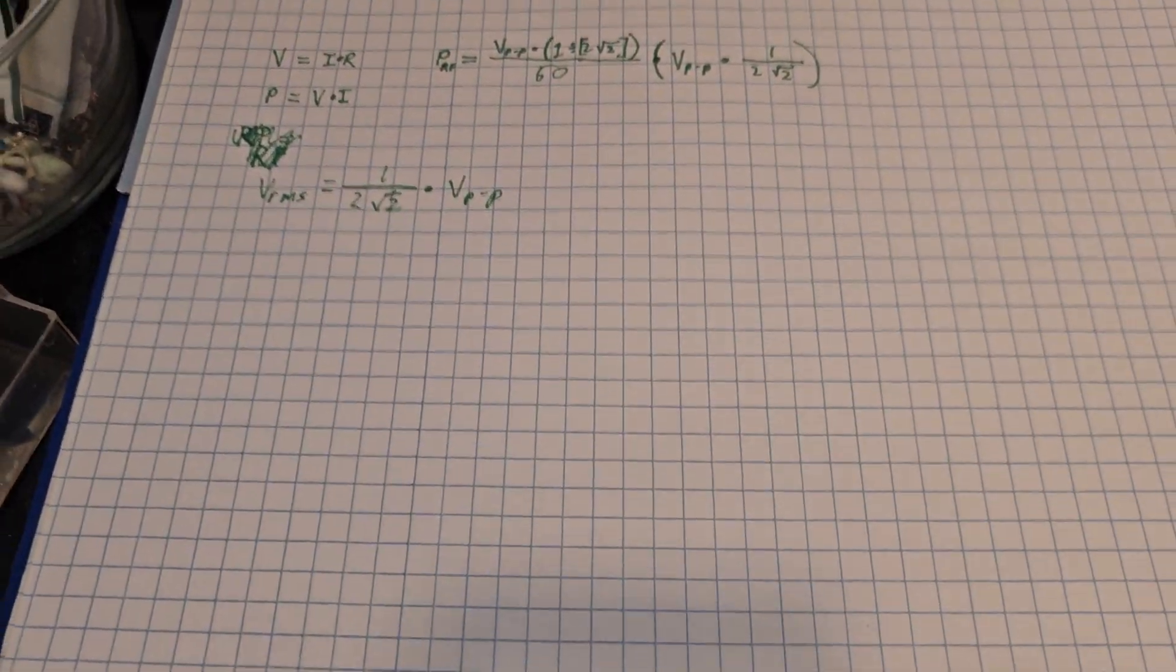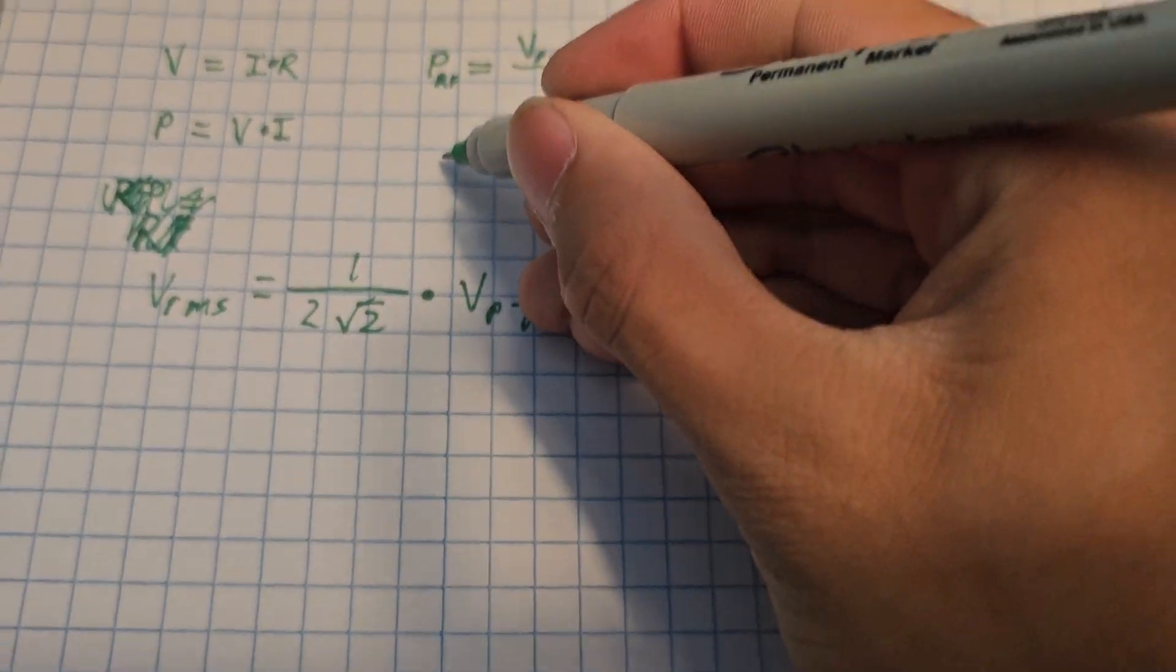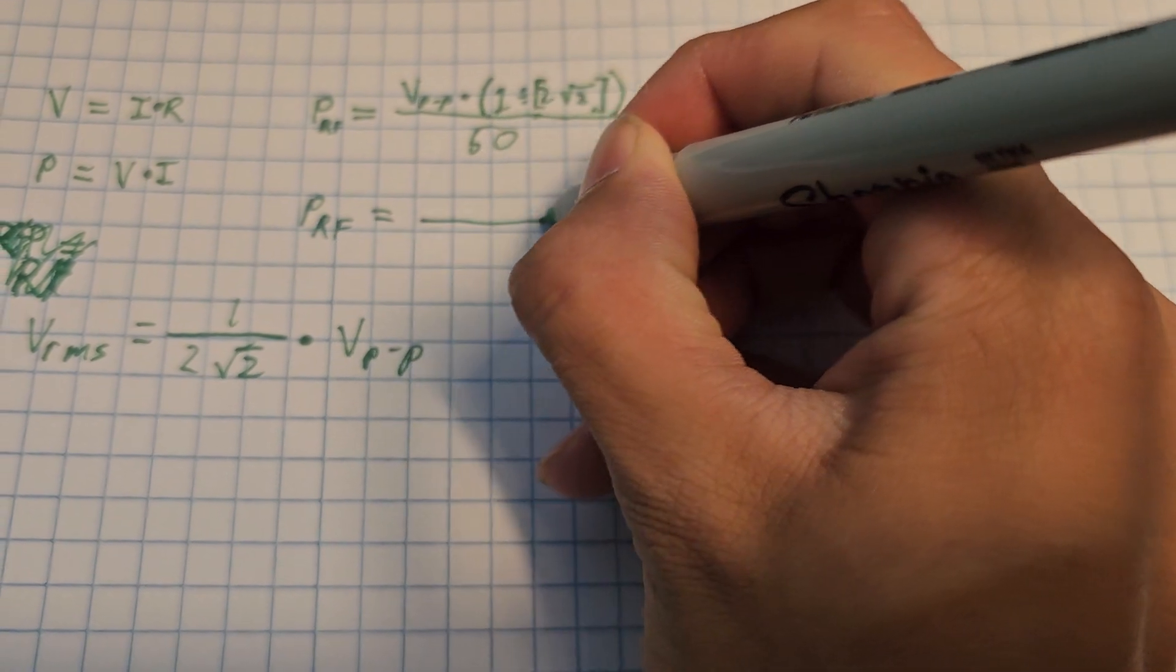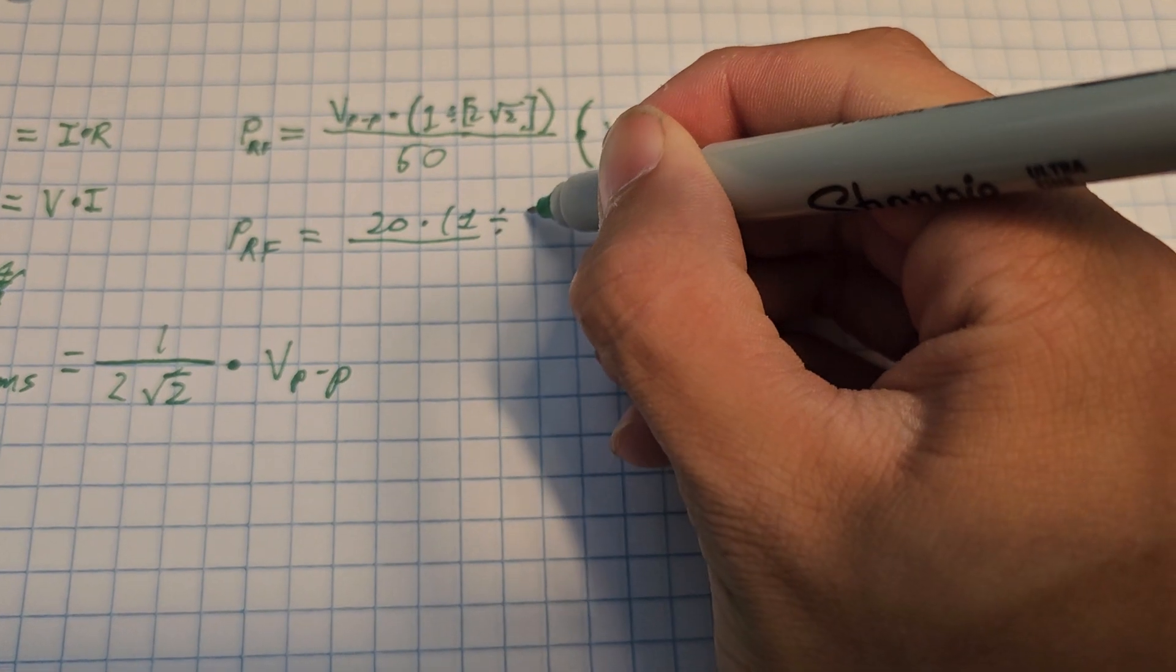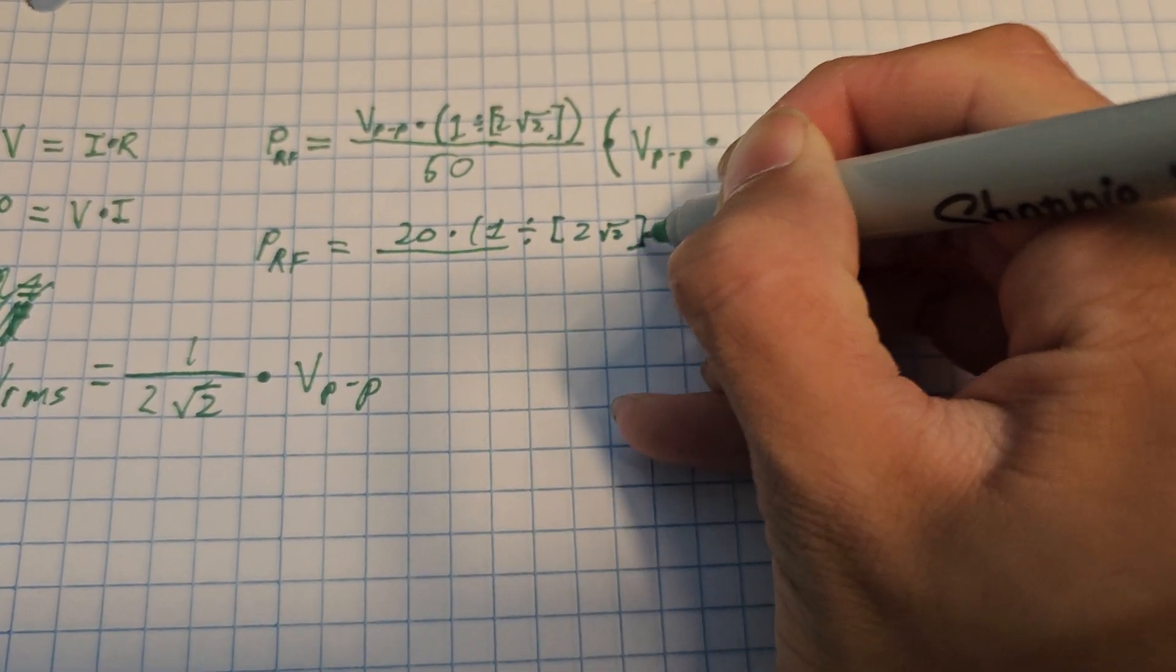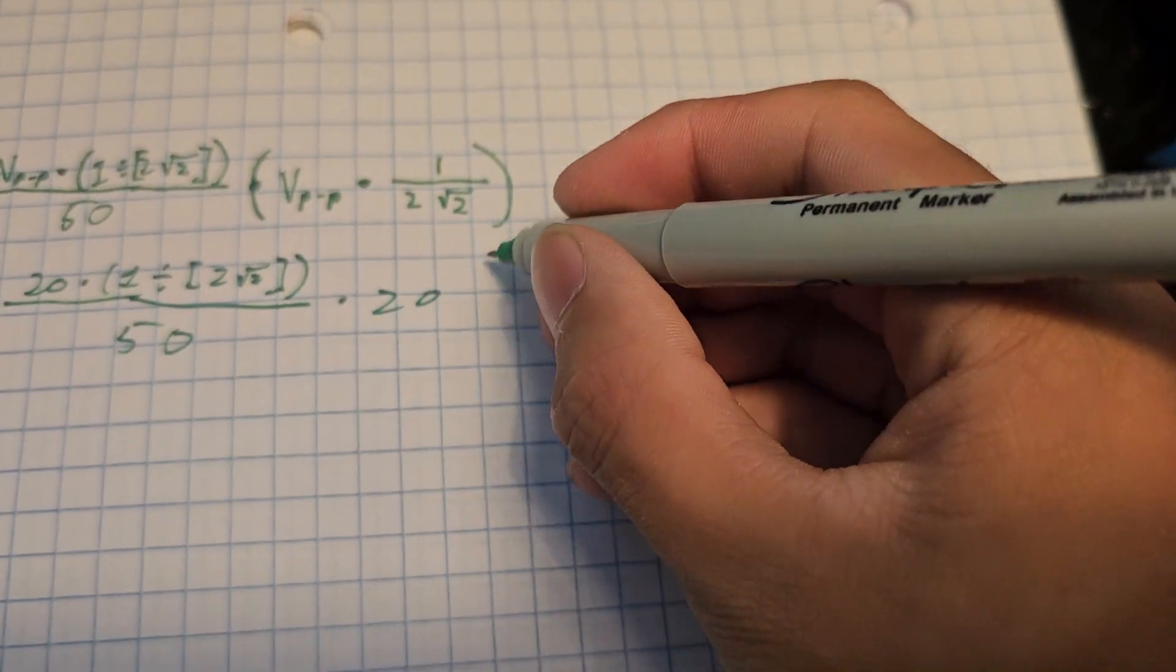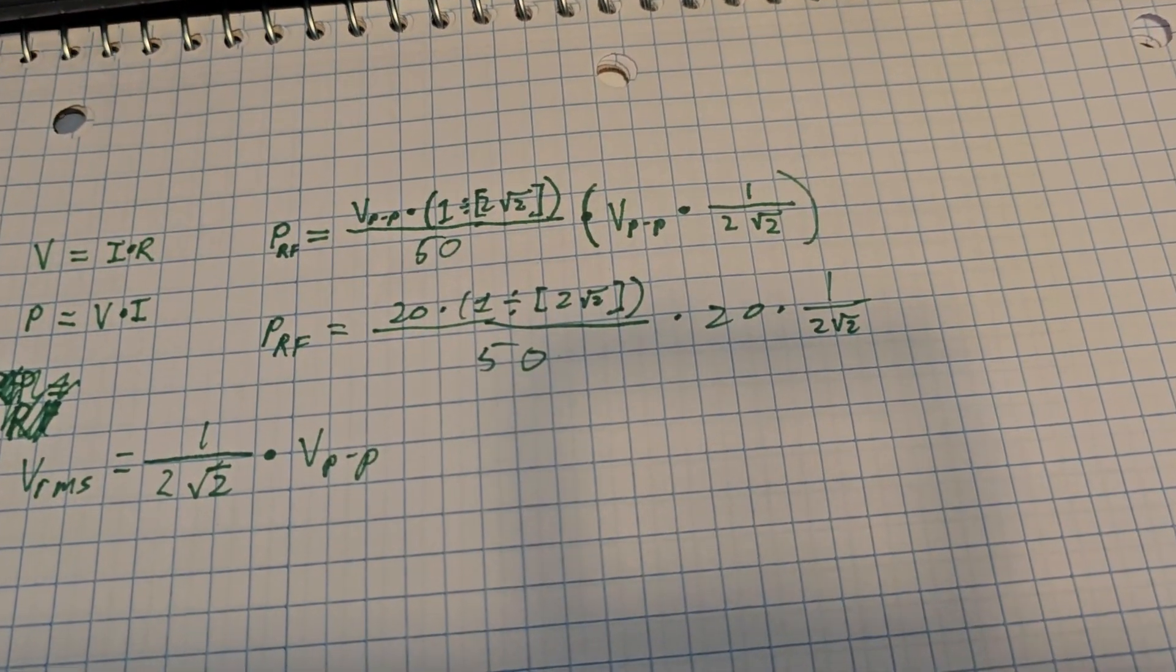Now let's do the math. Let's substitute: power equals 20 times 1 divided by 2 square root of 2, divided by 50, times 20 times 1 over 2 square root of 2. That is our equation.